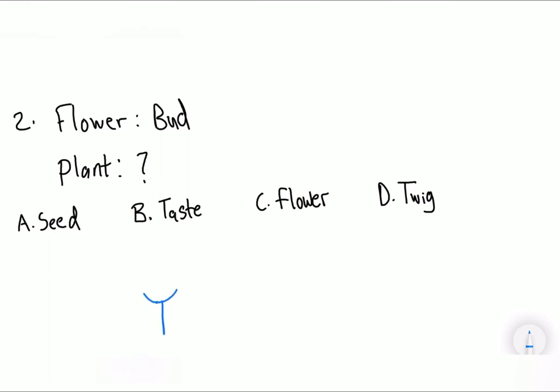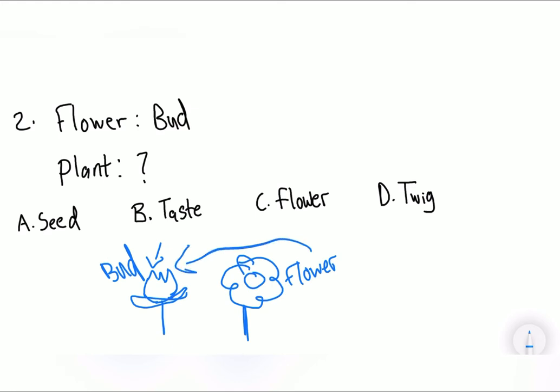You know when the flower basically has not completely bloomed yet? This is a very bad drawing. This is not a tulip. It's supposed to be when the flower has not yet bloomed yet. But this is a bud, okay? And when the flower is like open and everything, please excuse my drawings. When the flower is open, it's called a flower. So basically, a flower comes from a bud.